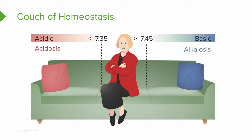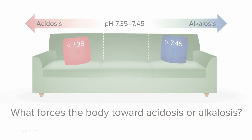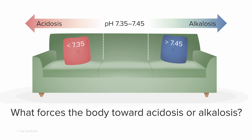As you move toward acidic and get lower than 7.35, we call that acidosis. If you're getting more basic, greater than 7.45, we call that alkalosis. We're going to talk about the things that force the body toward acidosis or alkalosis — what are the things that change my pH? What caused my pH to go lower and more acidic, or higher and more alkalotic?